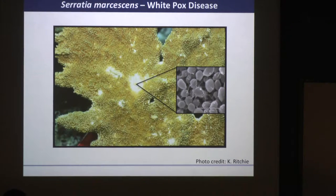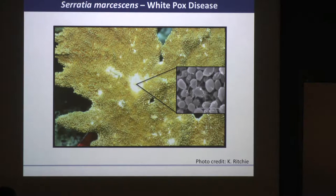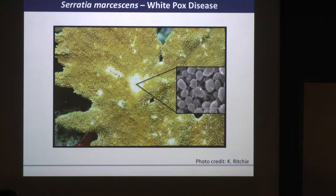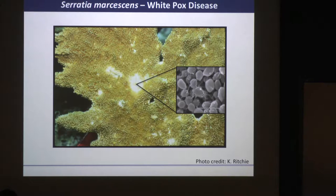As a grad student, I wanted to start using Aptasia as a model system because I was interested in how this opportunistic pathogen Serratia marcescens is able to cause disease in acroporid corals — how it can establish itself in an otherwise healthy coral that should have a suite of normally associated bacteria. This disease is marked by sporadic pox splotches across the coral colony, rapidly spreading at about 2.5 centimeters per day across an entire colony, and is contagious across acroporid species.